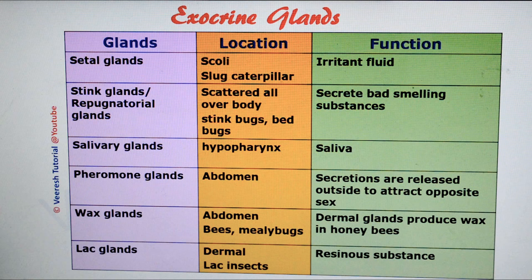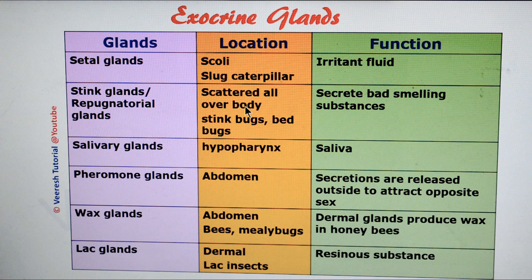Now let's see the exocrine glands. The first one is setal glands — scoli of slug caterpillars secrete irritating fluid. Sting glands and repugnatorial glands are scattered all over the body, sometimes in the thorax; they secrete bad-smelling substances and are present mainly in stink bugs and bed bugs.